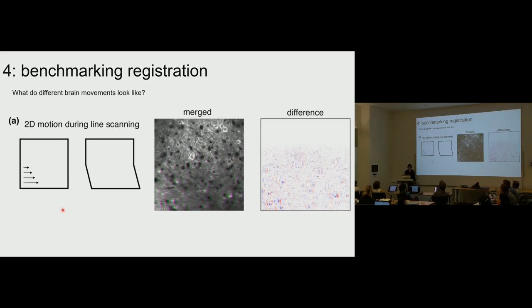Here's an example of a common movement: 2D motion during line scanning. For 2P imaging, you're line scanning your frame at different times. While you're line scanning, the brain might have moved — the mouse might have moved a lot in the middle of scanning. This means you get blur at the bottom of the frame but not at the top, producing a characteristic pattern in your difference image.